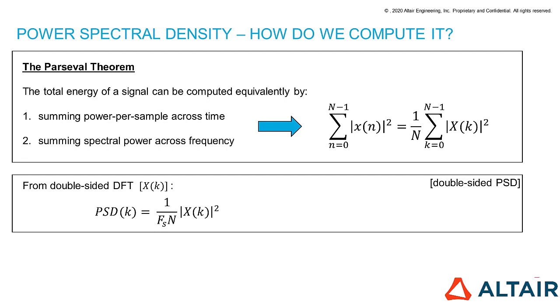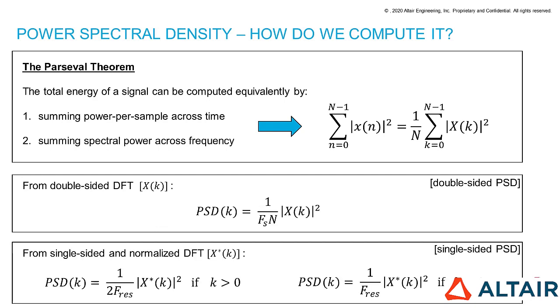To get the single-sided power spectral density, we just need to fold it. And we will see how to do that in Compose. It can happen, though, that your colleagues or friends give you the single-sided and normalized discrete Fourier transform. In this case, this is the formula to compute the single-sided power spectral density. And this formula can be obtained just manipulating the one we have found before. Also here, we can see that we are computing a power density, since we are dividing by a frequency. Now, let's get some practice with these formulas in Compose.